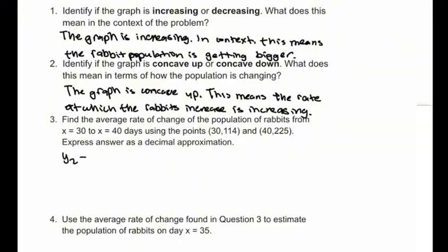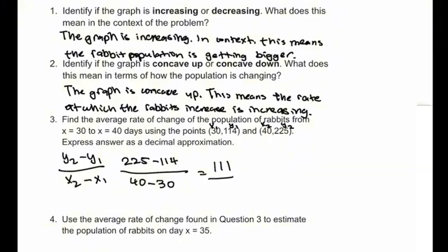y2 minus y1 over x2 minus x1. We can label the points x1, y1, x2, and y2. And plug it into the formula, 225 minus 114 over 40 minus 30, which equals 111 divided by 10, which equals 11.1.